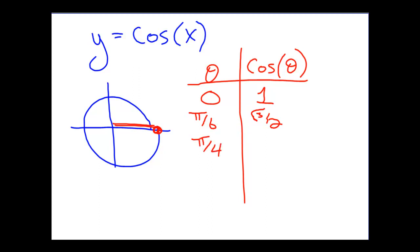At π over 4, at 45 degrees, we have a value of the square root of 2 over 2. At π over 3, which is 60 degrees, we have a value of 1 half. At π over 2, 90 degrees, we have a value of 0.